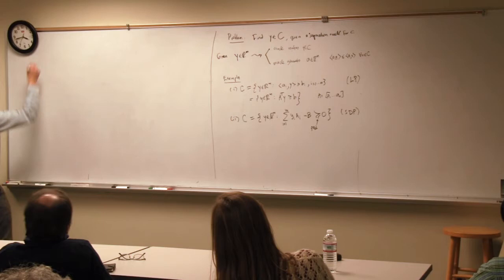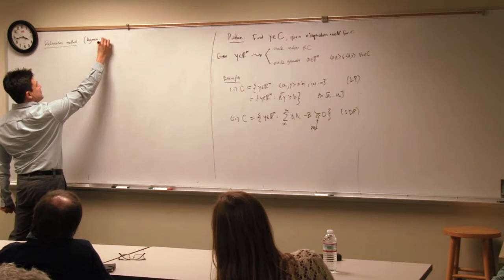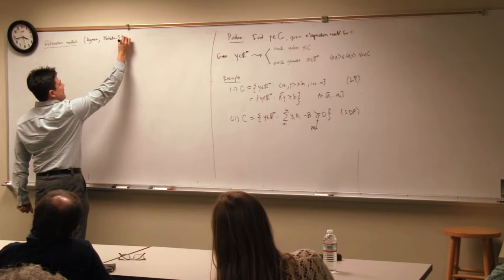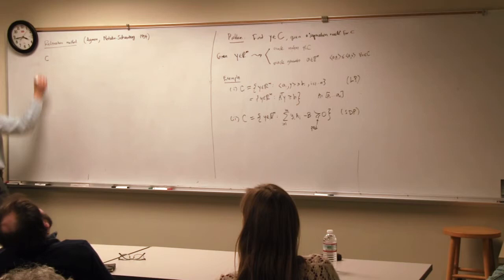The first algorithm is called the relaxation method. It was invented by Agmon and Motzkin in about 1954. The idea is: we consider the problem where C is a polyhedron. Given a candidate point Y, we check the inequalities.